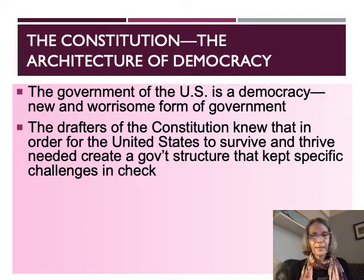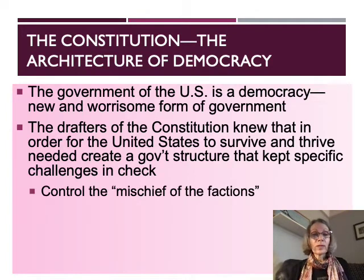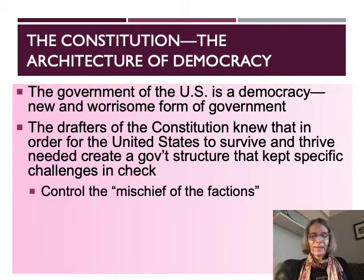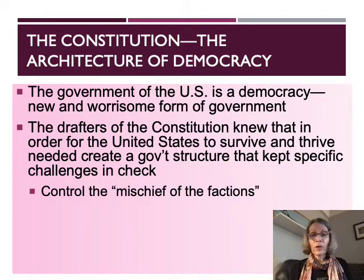A democracy needs to control the so-called mischief of factions, outlined in James Madison's Federalist Paper No. 10, which is in the back of your textbook. Factions are groups of people that bind together promoting their own interests without caring about the interests of others. If those kinds of groups get power, they can be very dangerous for democracy.